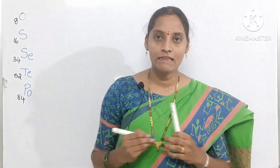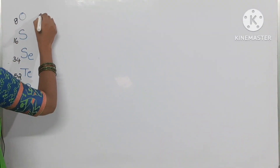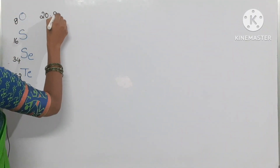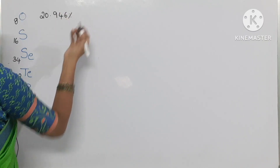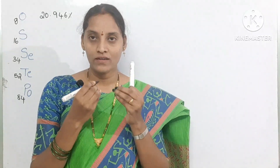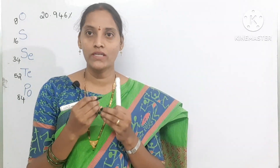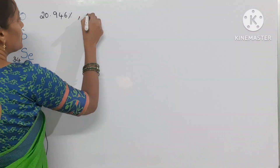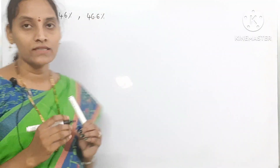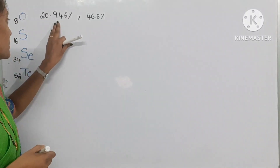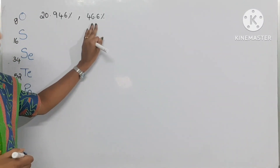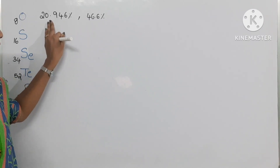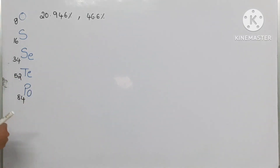Looking at the occurrence of these elements: oxygen in the atmosphere — dry air contains 20.946% by volume. In the earth's crust, oxygen is 46.6% by mass. This percentage is in the atmosphere and this percentage is in the earth's crust. Coming to sulfur next.